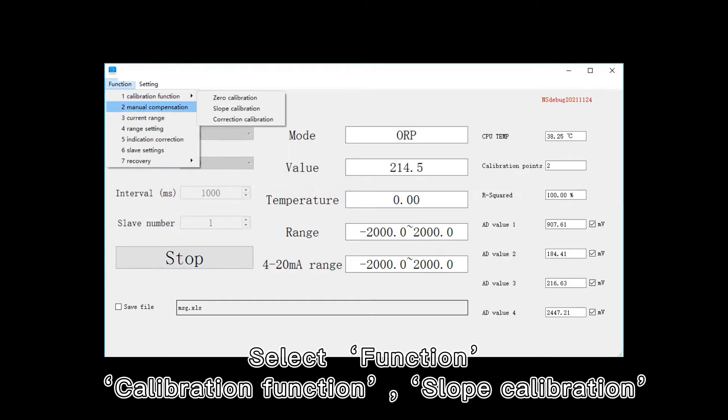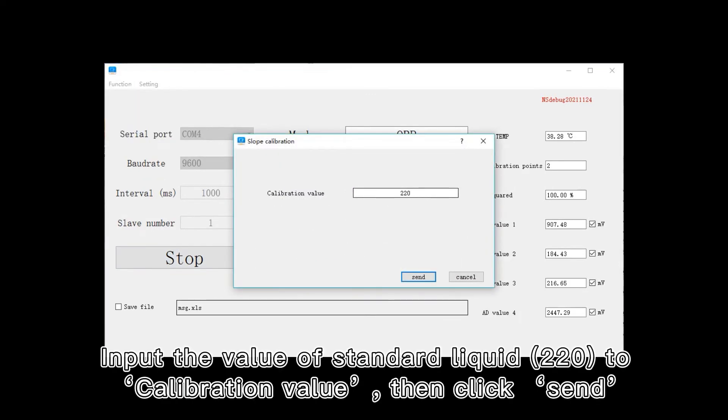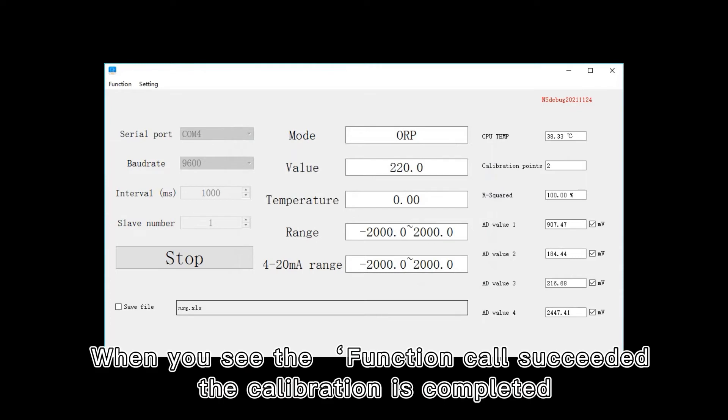Select function, calibration function, slope calibration. Input the value of standard liquid, 220, to calibration value, then click send. When you see the function call succeeded, the calibration is completed.